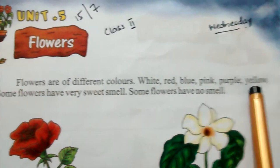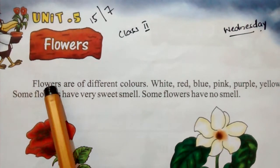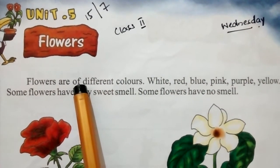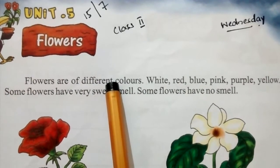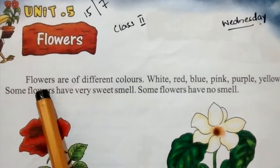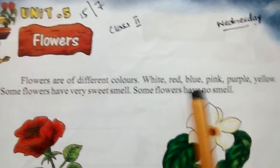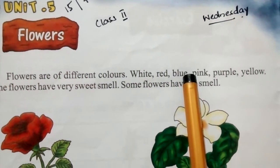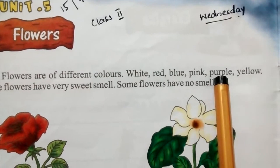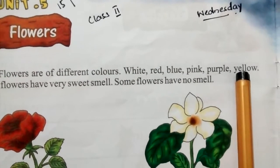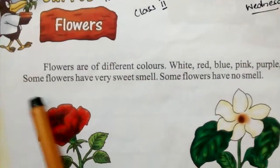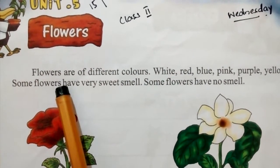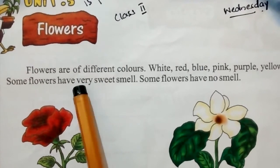The colors of flowers are: white (W-H-I-T-E), red (R-E-D), blue, pink, purple, and yellow (Y-E-L-L-O-W).